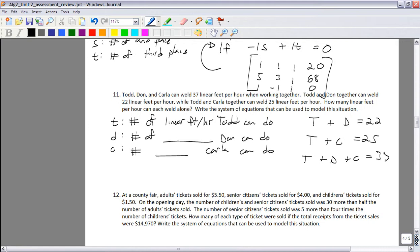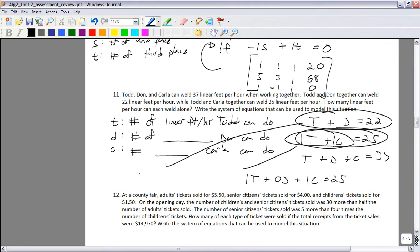So then it starts saying, okay, Todd and Dawn together can weld 22 linear feet per hour. So you'd have T plus D is 22. Todd and Carla can do 25. And when they all work together, it was T plus D plus C is 37. So one thing you'll notice here is this equation here is missing, it's 1T plus 1C, it's missing D. So you can actually, you can rewrite this guy as 1T plus 0D plus 1C equals 25. And then the top one I would rewrite as 1T plus 1D plus 0C equals 22. So then I'd build a matrix with this guy, this guy, and this guy. All right. One more problem.